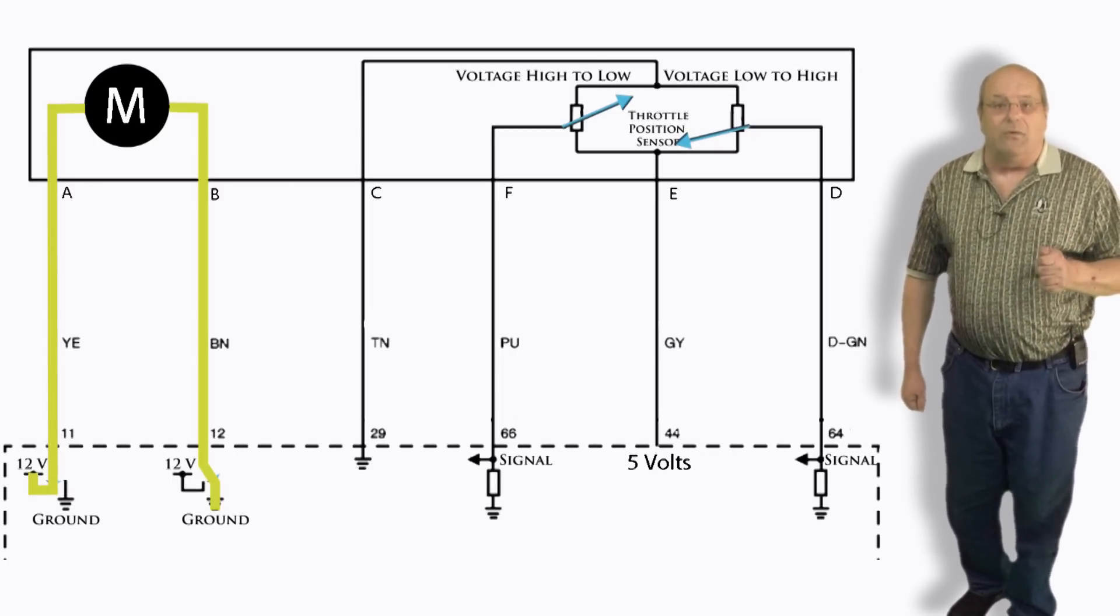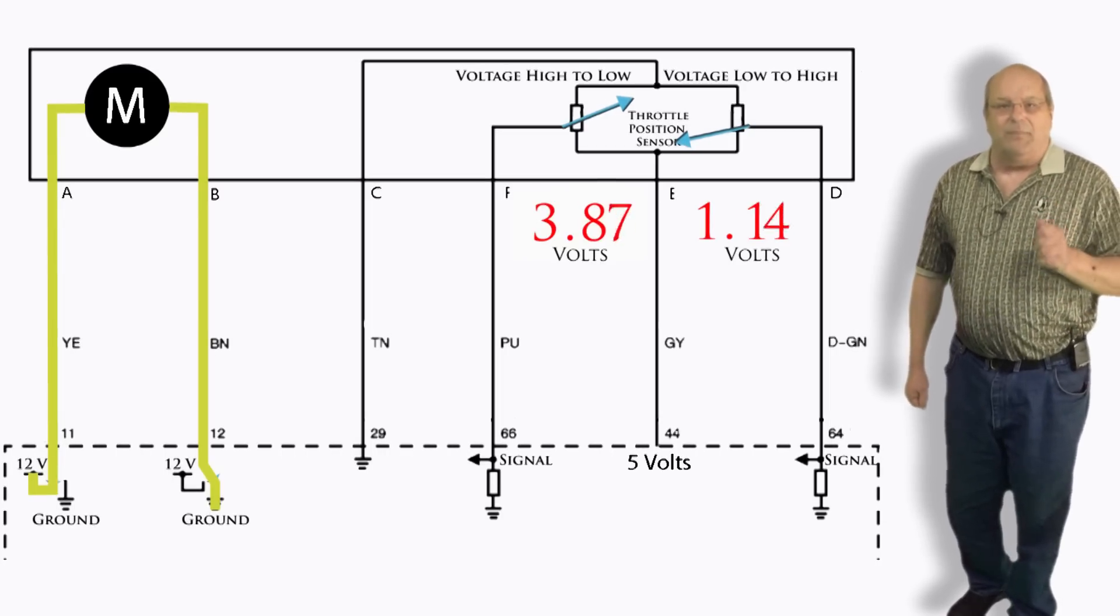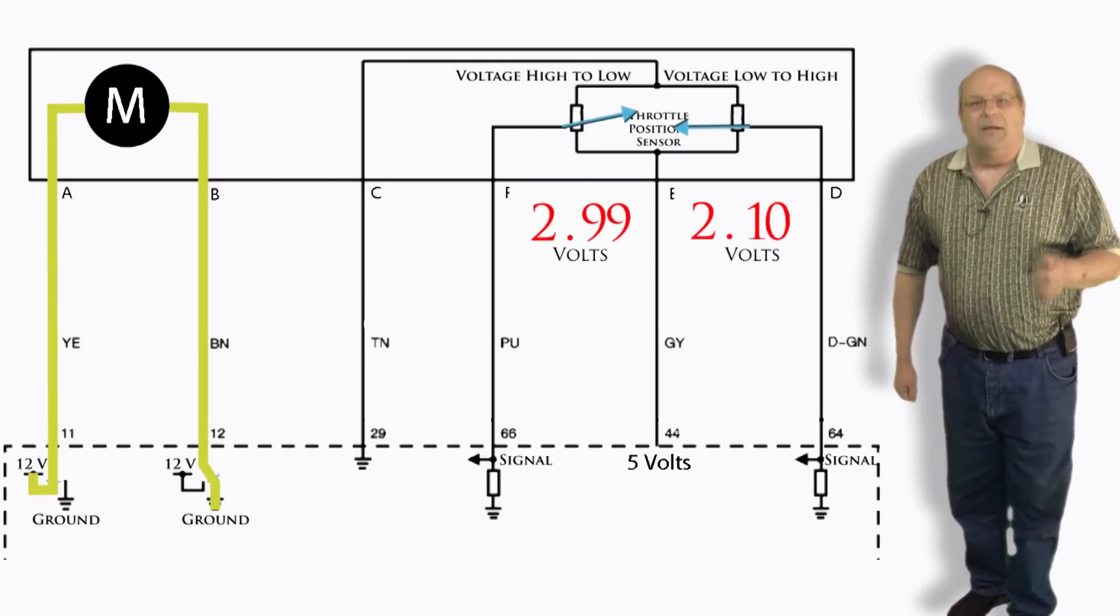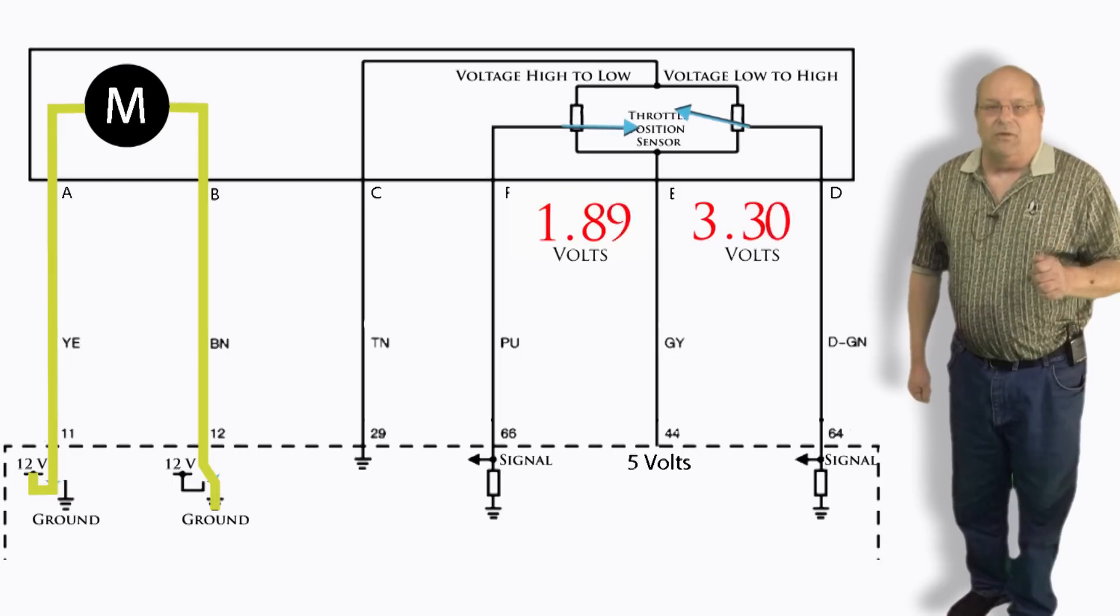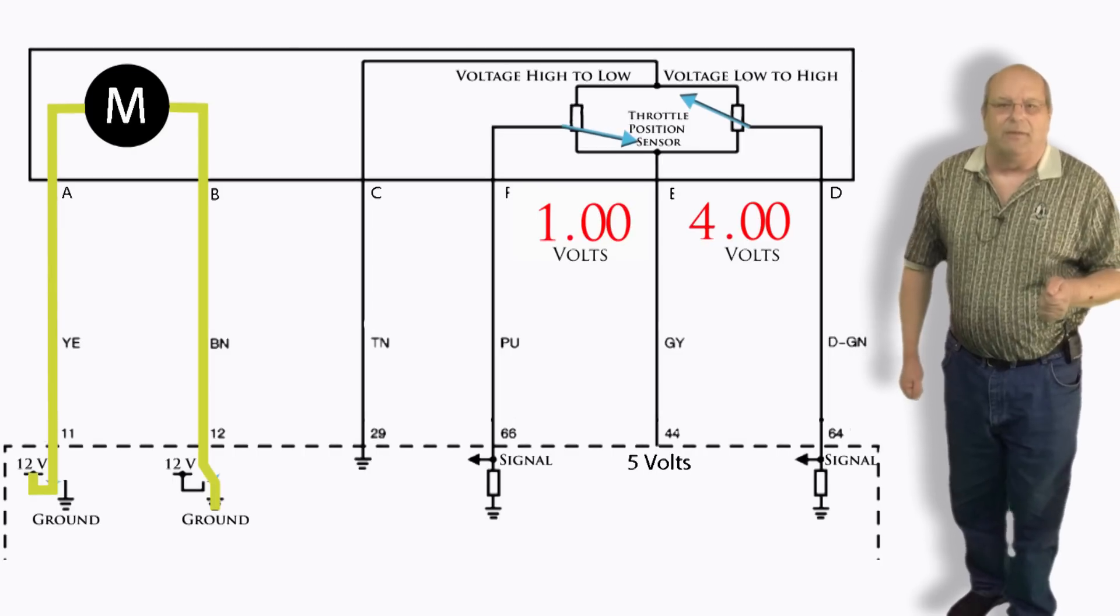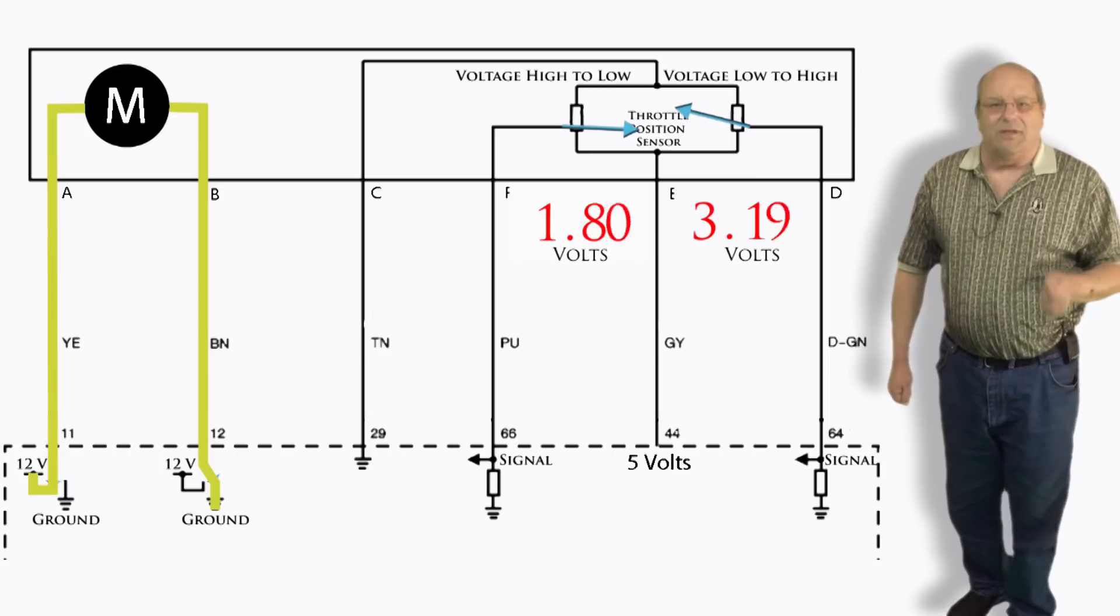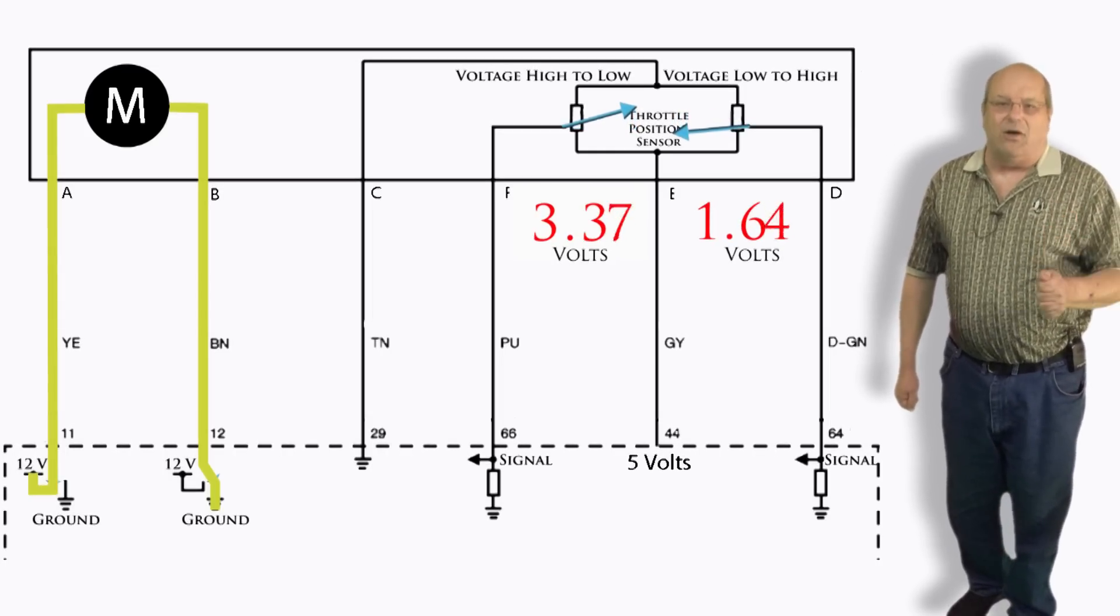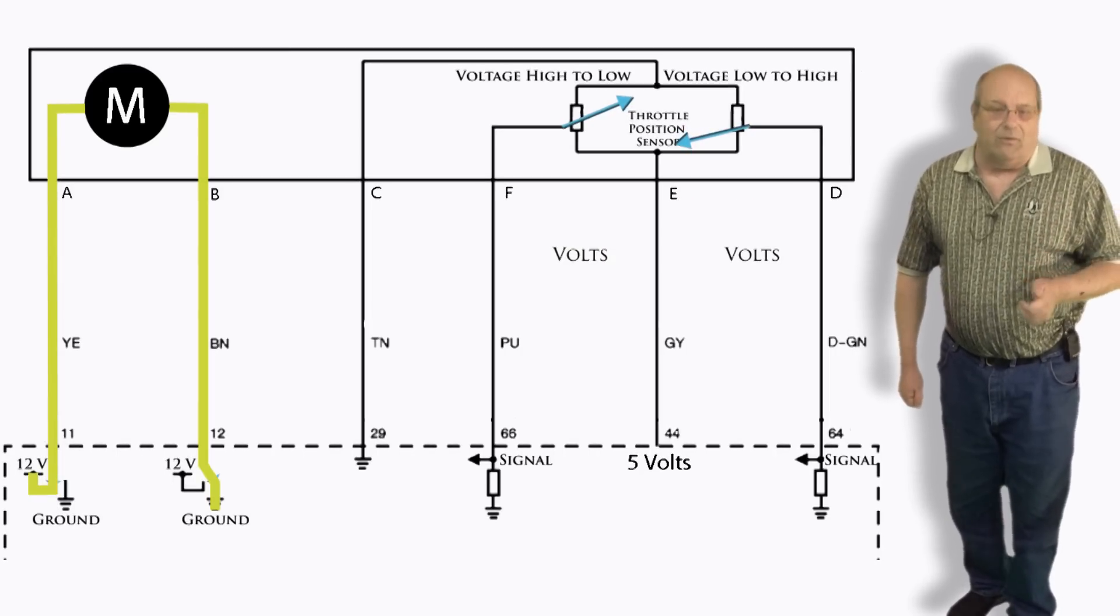When the motor begins to move the throttle plate, the throttle position sensors send a signal to the PCM reporting how far it had rotated. This is also a redundant signal like the APPS. One goes from high voltage to low voltage and the other sensor works in the opposite direction. Again, the total voltage should equal 5 volts. If the voltages do not equate to the specific amount the APPS is calling for, again the system will go into limp mode and the reduced power light will illuminate.